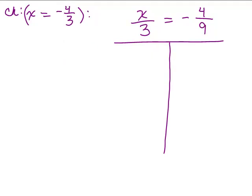So as it turns out, checking is actually harder than just doing the problem for most people. So we're going to plug in negative 4 thirds for X. So I have negative 4 thirds over 3. Now we have to simplify this. So what does this mean, negative 4 thirds over 3? It means negative 4 thirds divided by 3, which means negative 4 thirds times 1 third.